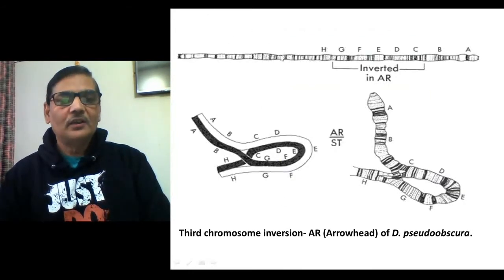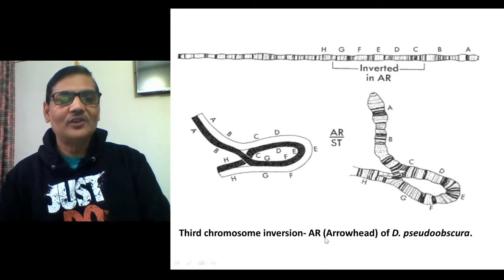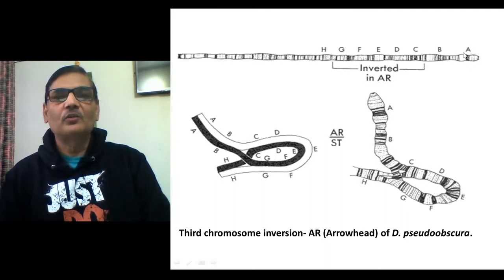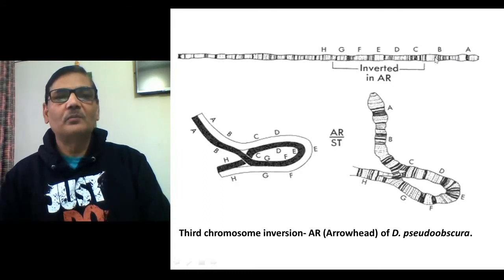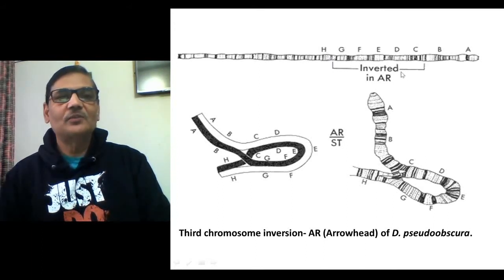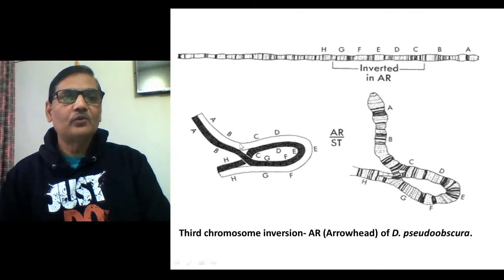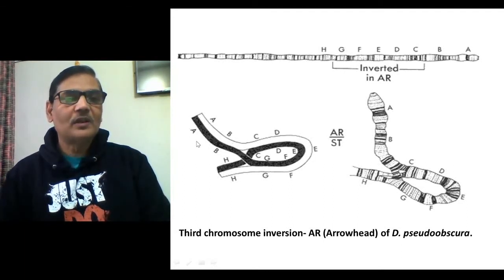In Drosophila pseudo obscura, one particular inversion is called AR, which stands for arrowhead. In the polytene chromosome, the normal gene arrangement or banding pattern would be A through H. If the portion between B, C and up to between G and H gets inverted, that will be considered as AR. Individuals could have a heterozygous situation — one chromosome with normal gene arrangement and the other with the inverted one — which is referred to as ST/AR.